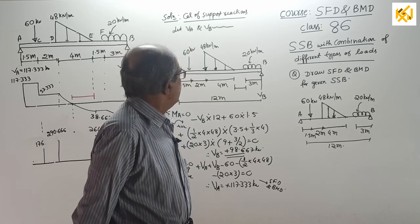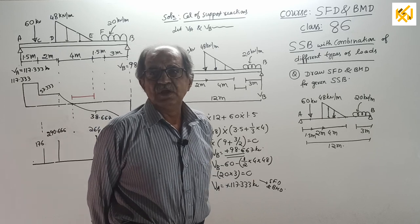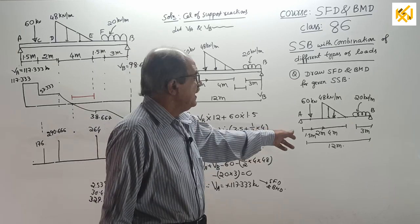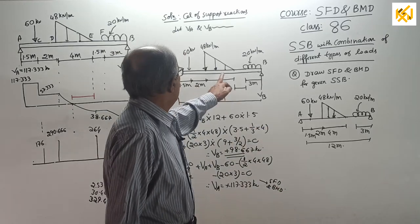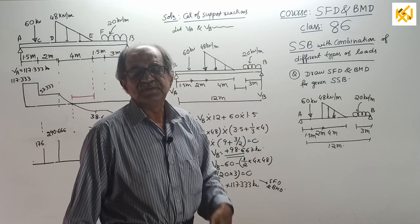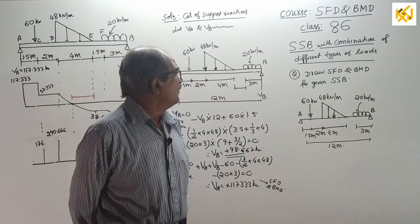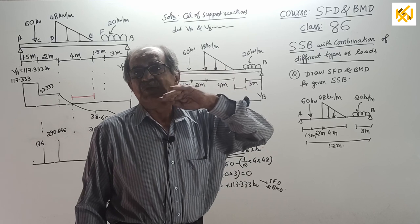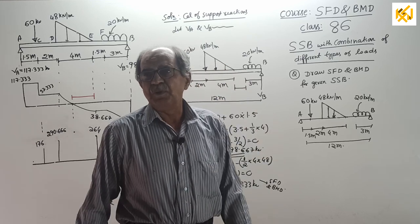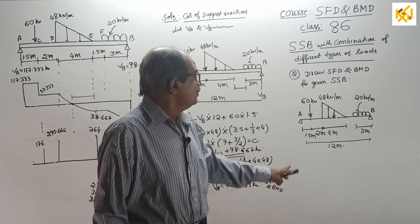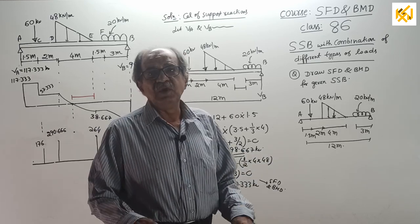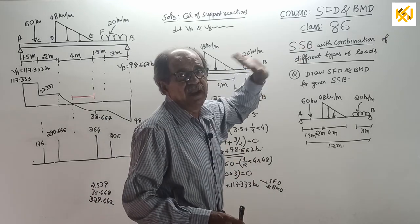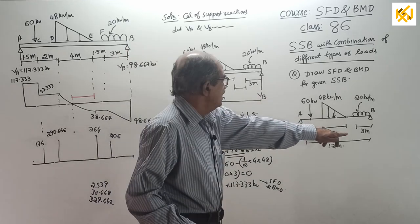Welcome to class number 86, continuation. As I told, move onwards, combination of different type of loads. I will solve some maybe seven or eight classes continuing this way: UVL, UDL, and point load in different places. By this time you know all the concepts of how the variation will come for SF and BM for point load, UDL, UVL.